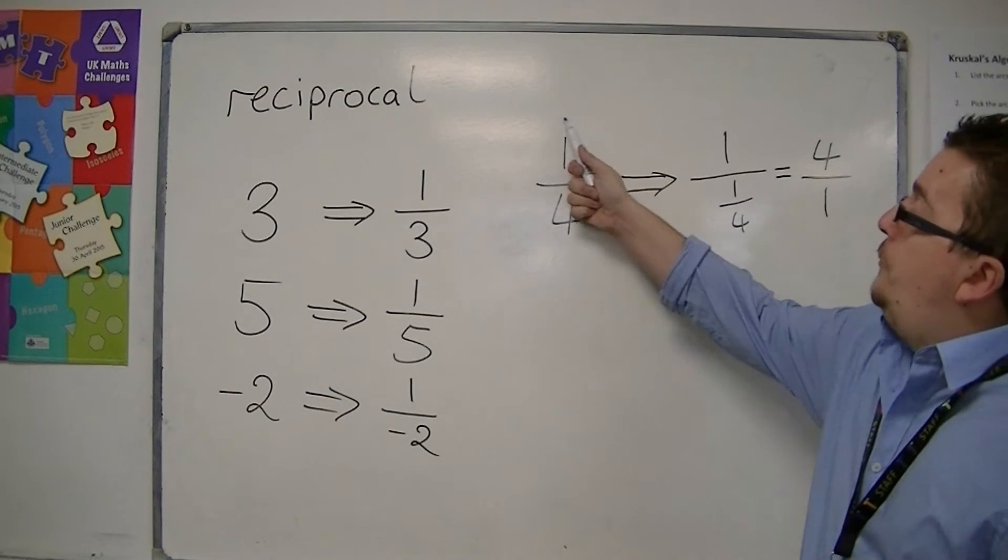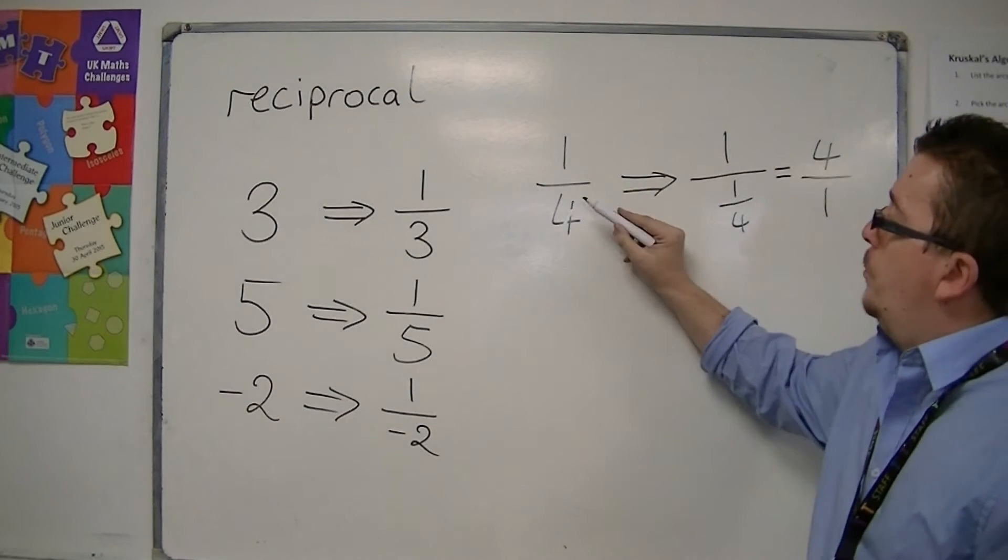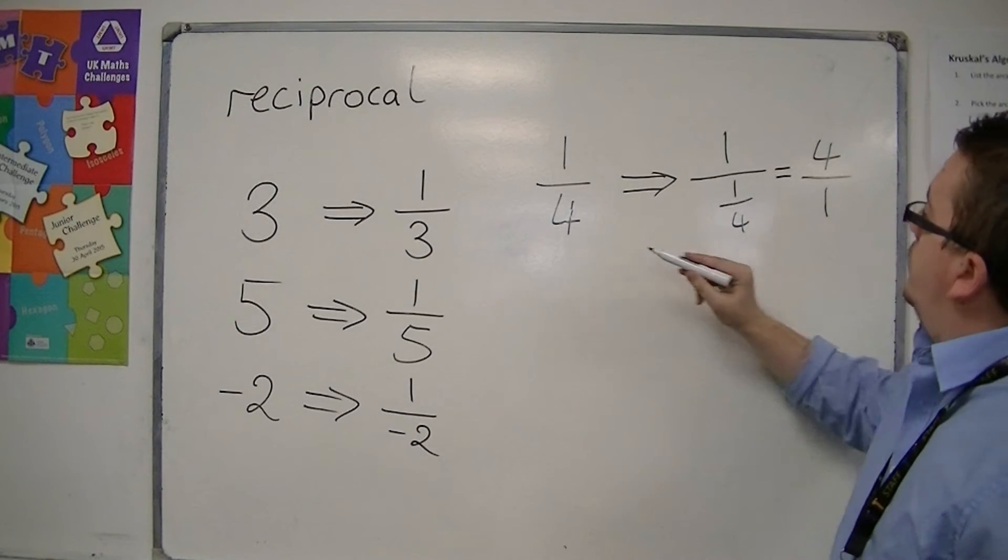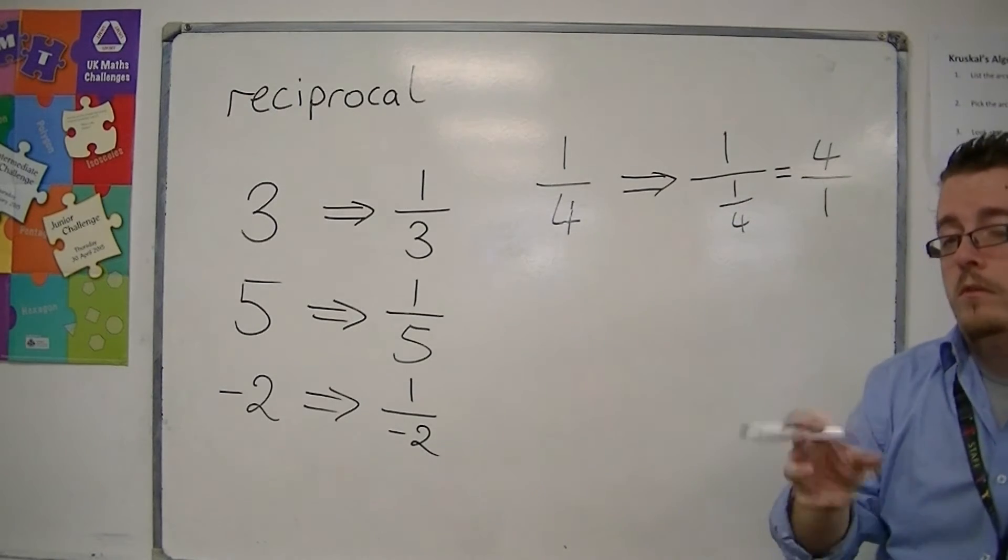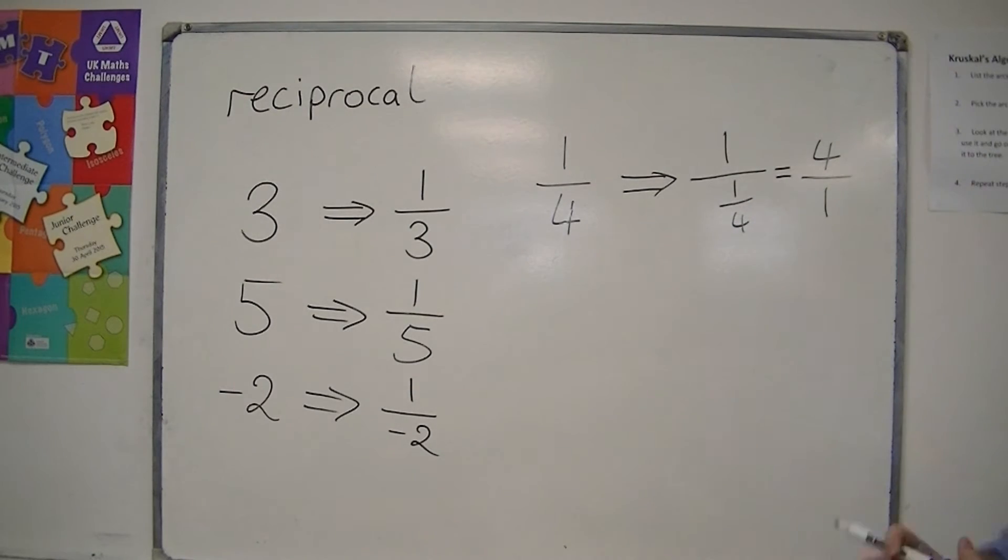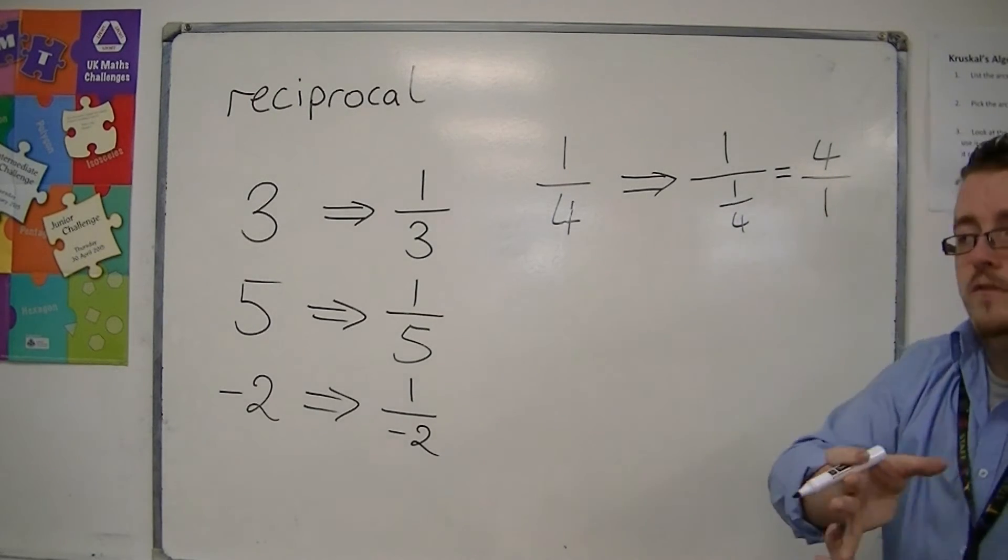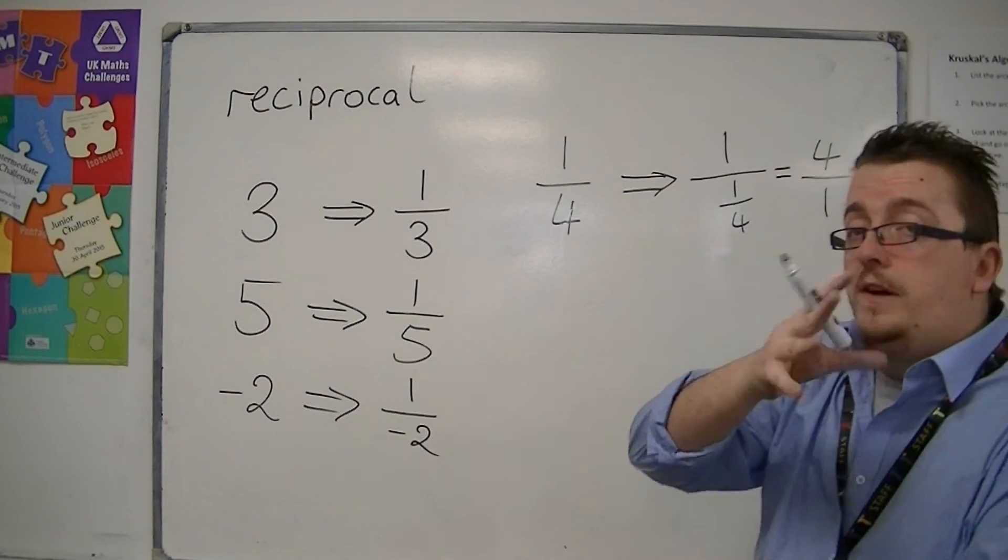But if you have a fraction like 1 over 4, then the reciprocal flips the fraction upside down. And that's what we did in the division. If you remember with dividing fractions, we had to flip a fraction, and effectively what you're doing is finding the reciprocal.